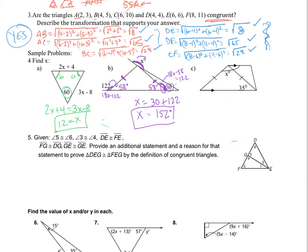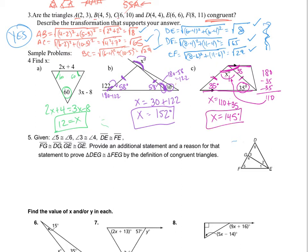For part C, I'm looking for this X value. If this angle is 35, and I'm told that these two lines are parallel, that means the alternate angle will also be 35. Since this is an isosceles triangle, that other base angle will be 35 as well. X will be whatever this interior angle is plus 35. The triangle must sum to 180, and each base angle is 35, so 180 minus 35 minus 35 leaves 110 for the top angle. So X is 110 plus 35, which equals 145 degrees.